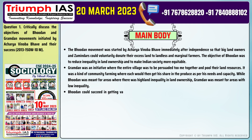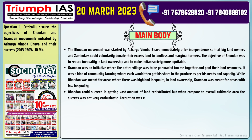Point 3: Bhudan could succeed in getting a vast amount of land redistributed, but when compared to the overall cultivable area, the success was not very enthusiastic. Corruption was evident as big landlords transferred most of the land to their relatives or to obtain some kind of favor in return.